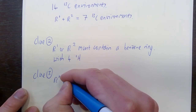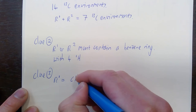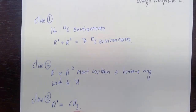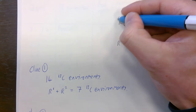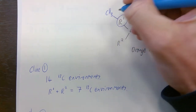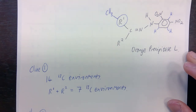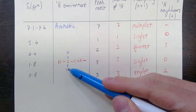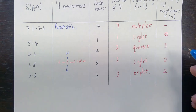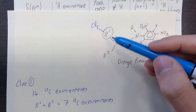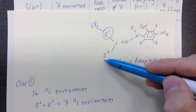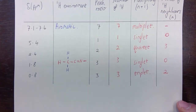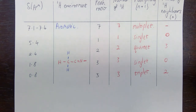We've worked out that R1 must be CH3 — a methyl group. That sequence is consistent with R1 or R2 being a methyl group. So that's clue three identified.